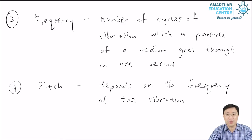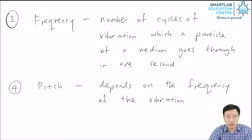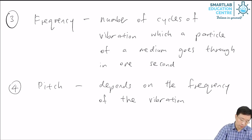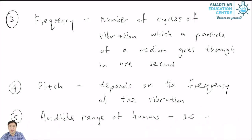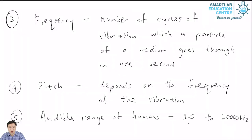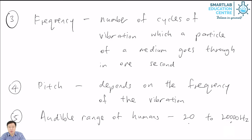Human beings can only hear sound within a certain range of frequency, called the audible range of humans. The audible range of human beings is 20 to 20,000 hertz. 20 hertz means the particles go through 20 cycles of vibration in one second. 20,000 hertz means the particles go through 20,000 cycles of vibration in one second. For sound within this range of frequencies, human beings can hear them.